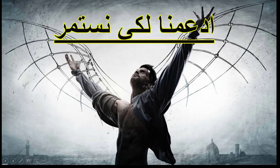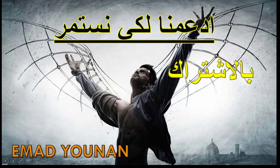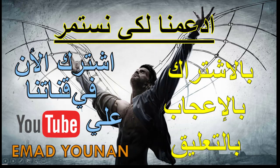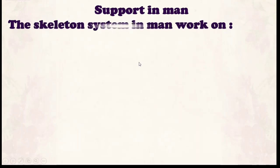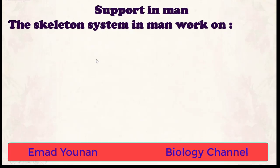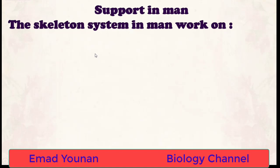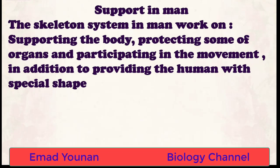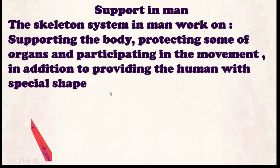Dear students, in this secondary series, imagine your experienced biology teacher. Today we'll start together the topic of support in humans and the structure of the locomotory system or skeleton system. Support is the mechanism that helps humans do many functions like motion and protecting some systems in the body. The skeleton system works on supporting the body, protecting organs like the heart, brain, and spinal cord, and participating in movement.